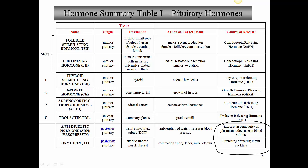Antidiuretic hormone release is stimulated by an increase in osmolarity of plasma or a decrease in blood volume - both amount to the same thing, which is an increase in the concentration of plasma solutes. Oxytocin is related to the stretching of the uterus and cervix, especially at term, and is also produced by the infant suckling at the breast of a nursing mother. Hopefully this table will pull things together and give you one place to look at all this material.